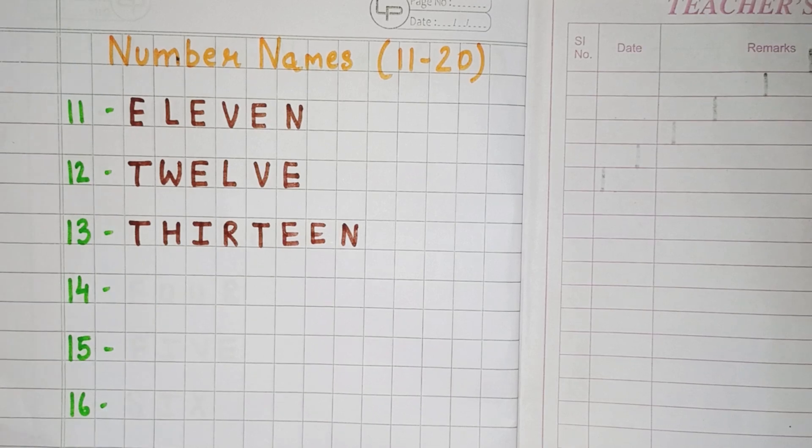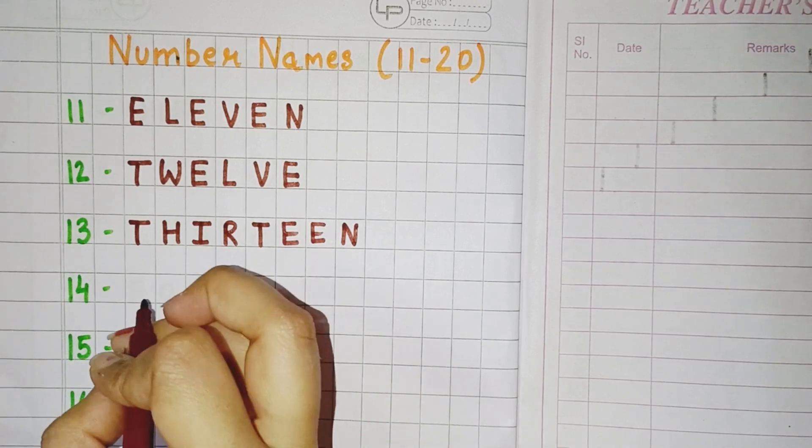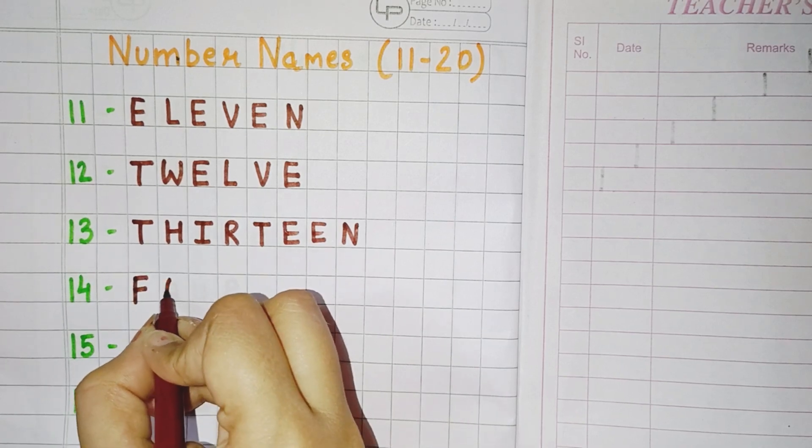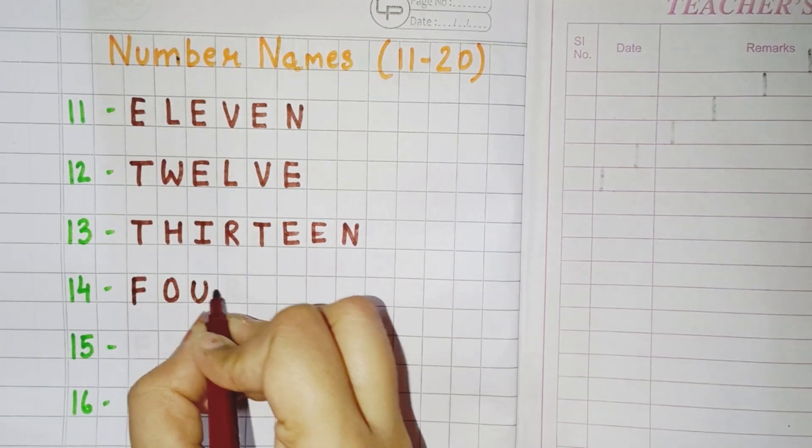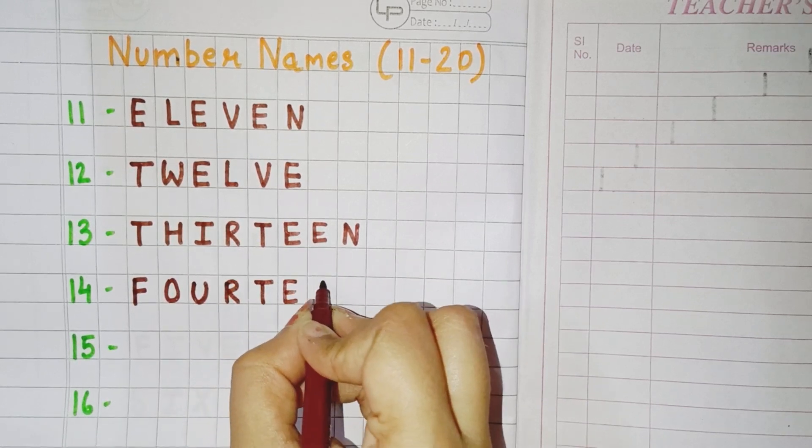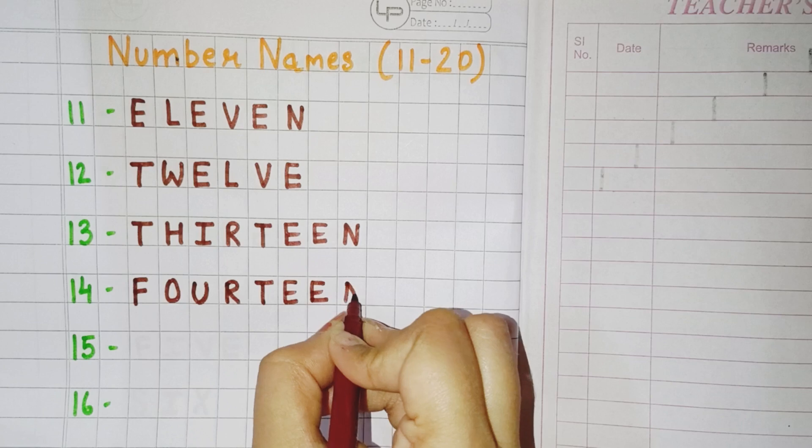Now the next number is 14. So you have to write the spelling. F, O, U, R, T, double E, N. Fourteen.